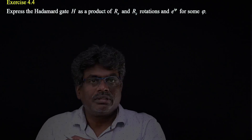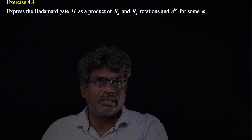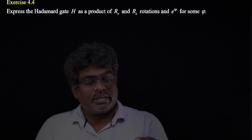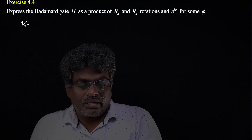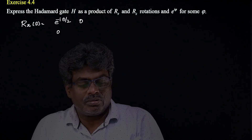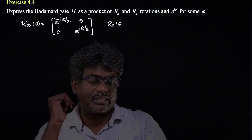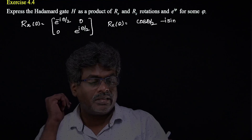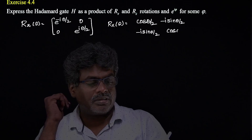The next question asks to show that the Hadamard gate can be written as a product of Rx and Rz and some phase e^(iφ). First, let me write the rotation matrices: Rz(θ) is the diagonal matrix with e^(-iθ/2) and e^(iθ/2), and Rx(θ) has cos(θ/2) on the diagonal and -i·sin(θ/2) on the off-diagonal.